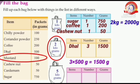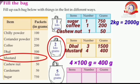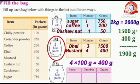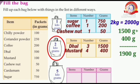Next, let's take mustard. One packet of mustard weighs 100 grams. Here we take four packets of mustard. Four times 100 grams equals 400 grams. The total weight is 1500 grams plus 400 grams equals 1900 grams. Since 2000 grams equals two kilograms, how many more grams do we need? Yes, 100 grams.